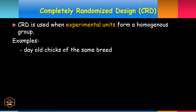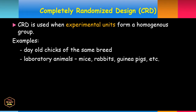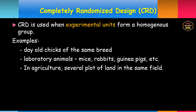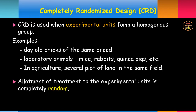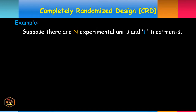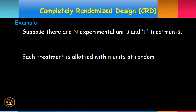Completely Randomized Design or CRD is used when experimental units form a homogeneous group. Examples include day-old chicks of the same breed, very young laboratory animals like mice, rats, rabbits, or guinea pigs, and in agriculture research, several plots of land in the same field. In CRD, the allotment of treatments to experimental units is completely random.